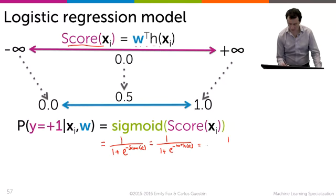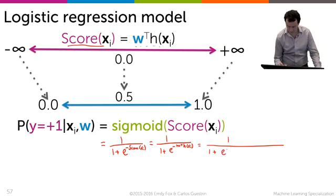We can write out that w transpose h explicitly as w1 h1 of xi plus dot dot dot plus w capital d hd of xi.